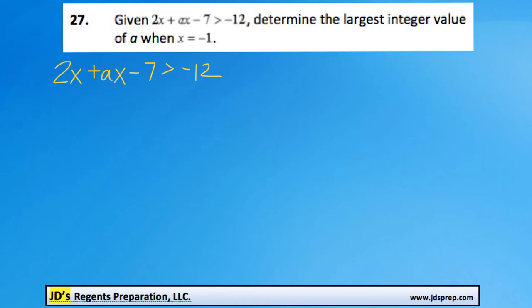This is problem number 27 from the June 2014 Algebra Regents Exam. Given this inequality we have here, what we need to do is determine the largest integer value of a when x equals negative 1.